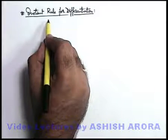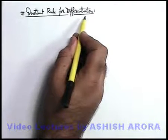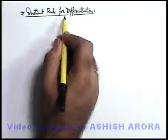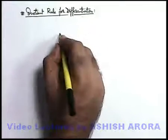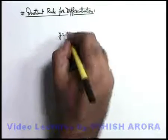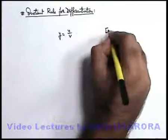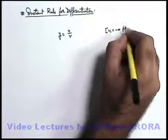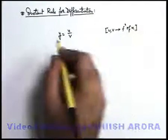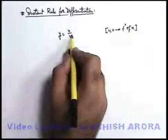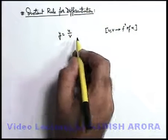Let's discuss one more rule for differentiation: the quotient rule. This rule is used whenever functions are given in quotient form — like if we are given a function y is equal to u by v, where both u and v are functions of x. So y is an indirect function of x when the values of u and v are substituted.